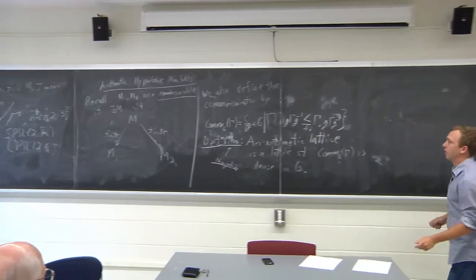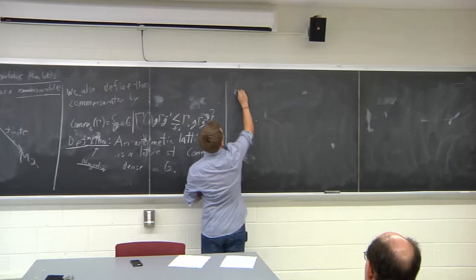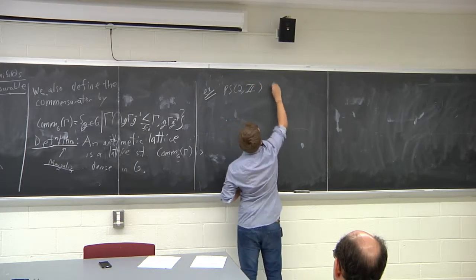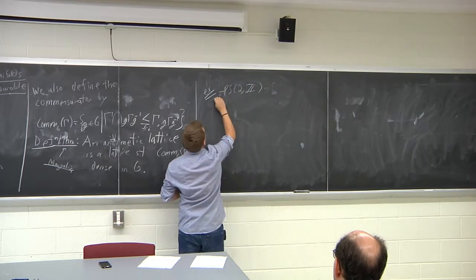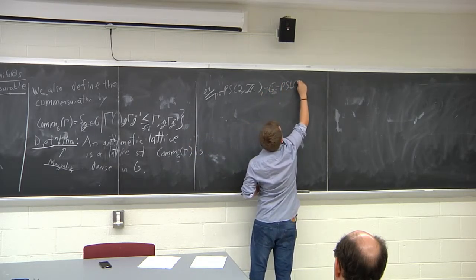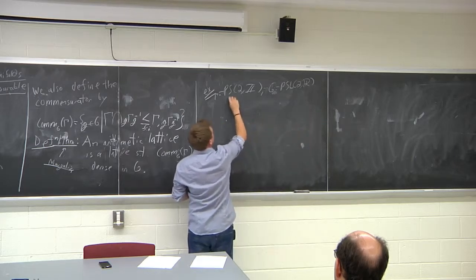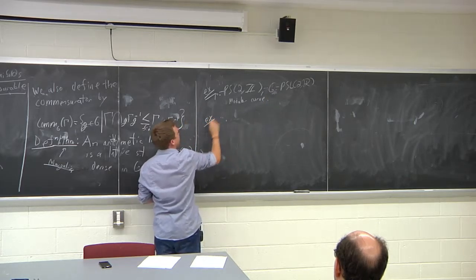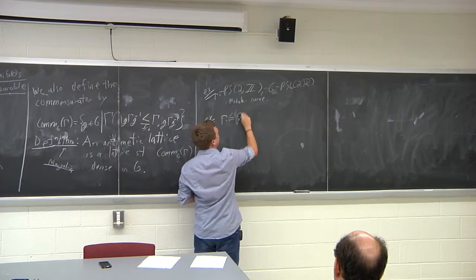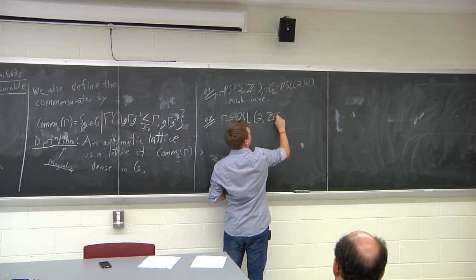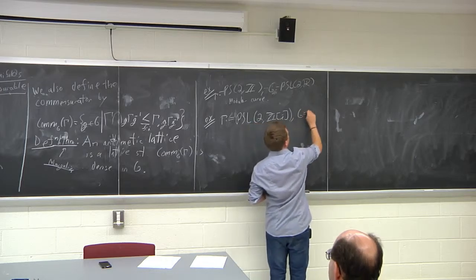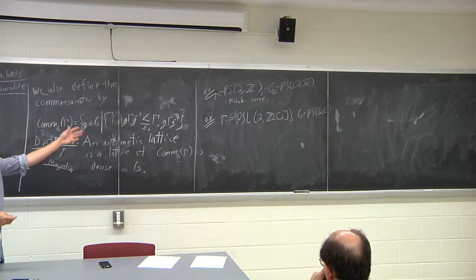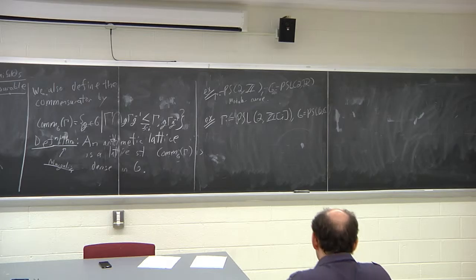If arithmetic lattices aren't your thing, there are two main examples to keep in mind. First: gamma equals PSL₂ℤ inside G equals PSL₂ℝ — this is the modular curve. Second: gamma equals PSL₂ℤ[i] and G equals PSL₂ℂ. More generally, if rings of integers are your kind of thing, you could take PSL(n, ring of integers) inside the appropriate G.